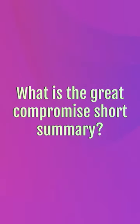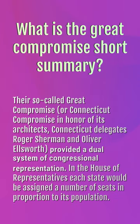What is the Great Compromise Short Summary? Their so-called Great Compromise, or Connecticut Compromise in honor of its architects, Connecticut Delegates Roger Sherman and Oliver Ellsworth, provided a dual system of congressional representation. In the House of Representatives, each state would be assigned a number of seats in proportion to its population.